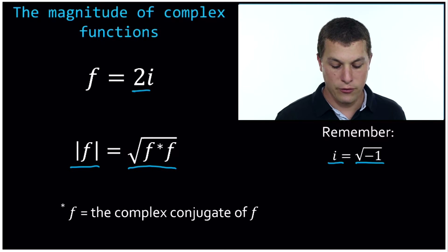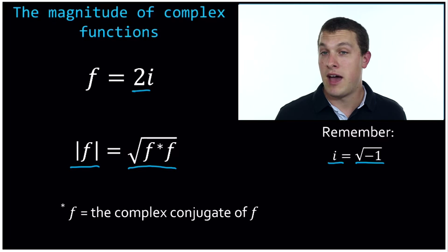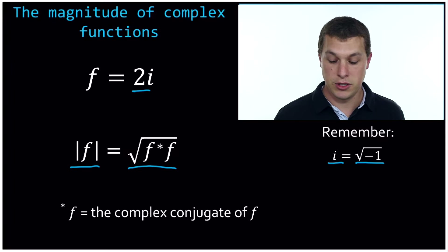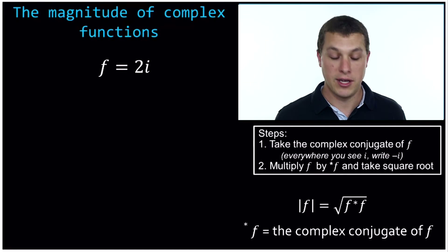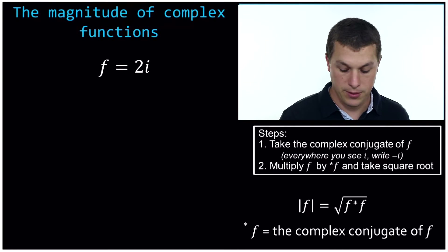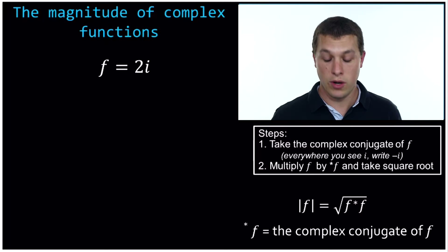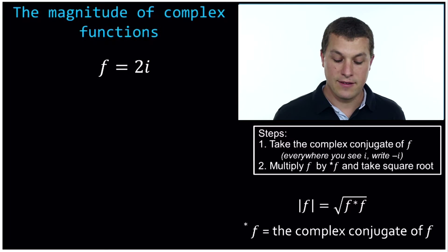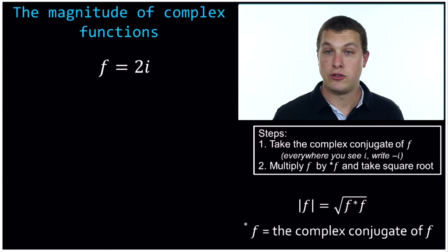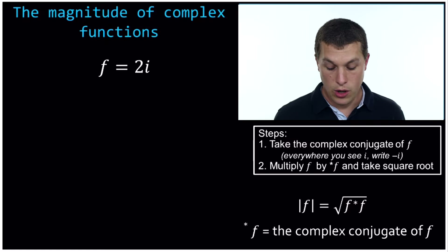It may seem kind of weird that we're doing all this stuff with imaginary numbers, but the math is pretty straightforward. And it's important to get down for applications in chemistry. So let's start out and do one, and I think you'll get a better sense of what this looks like. We have f is equal to 2i. What are the steps to finding the magnitude?